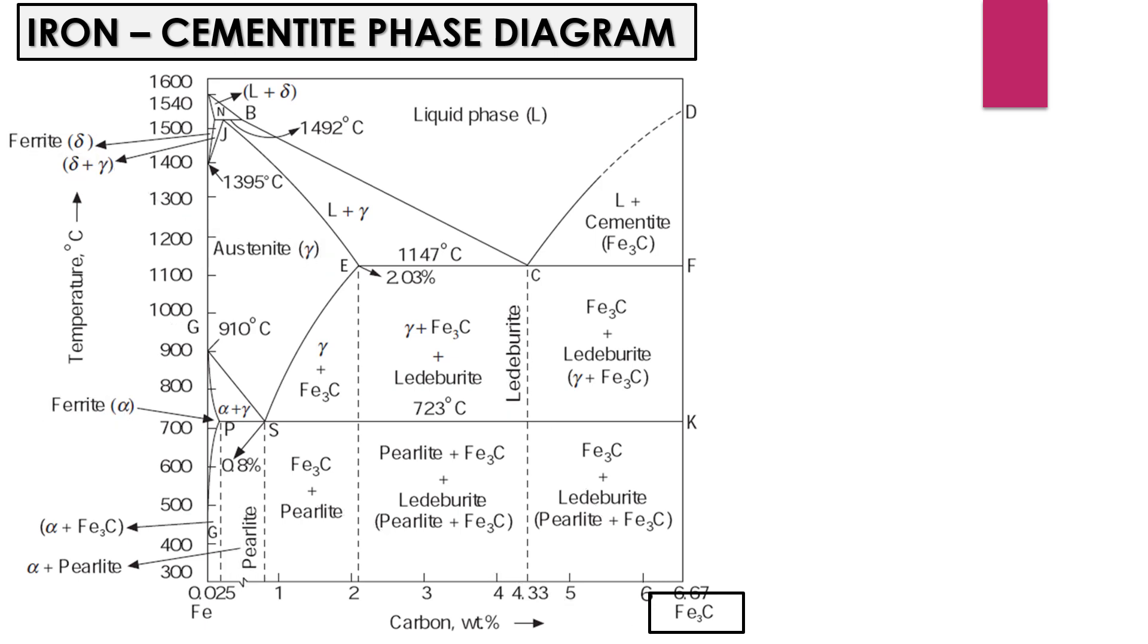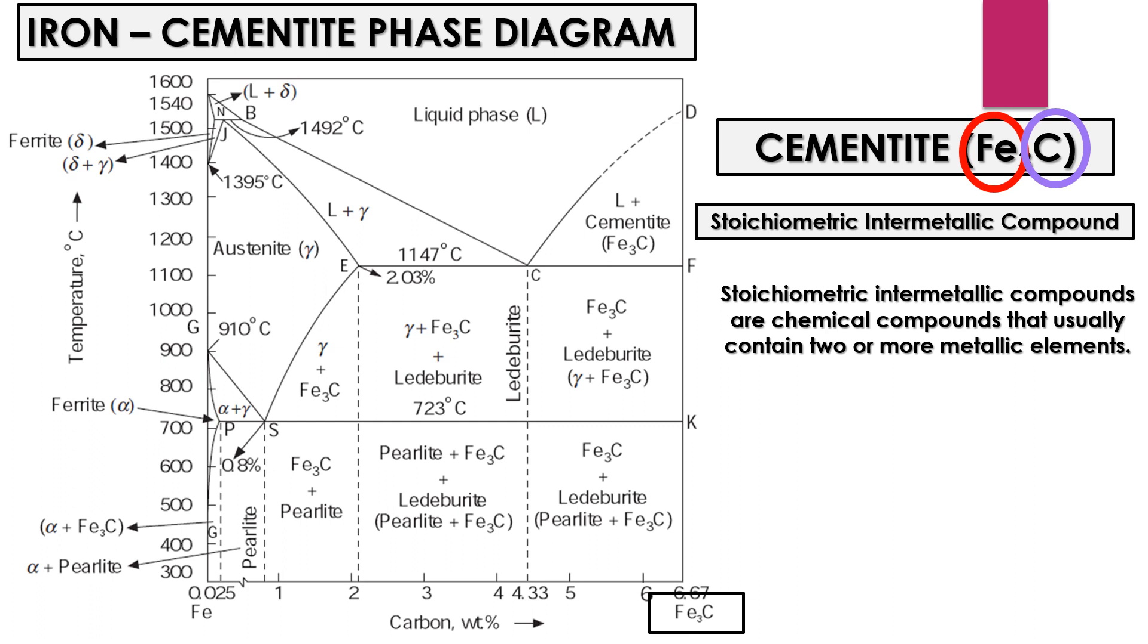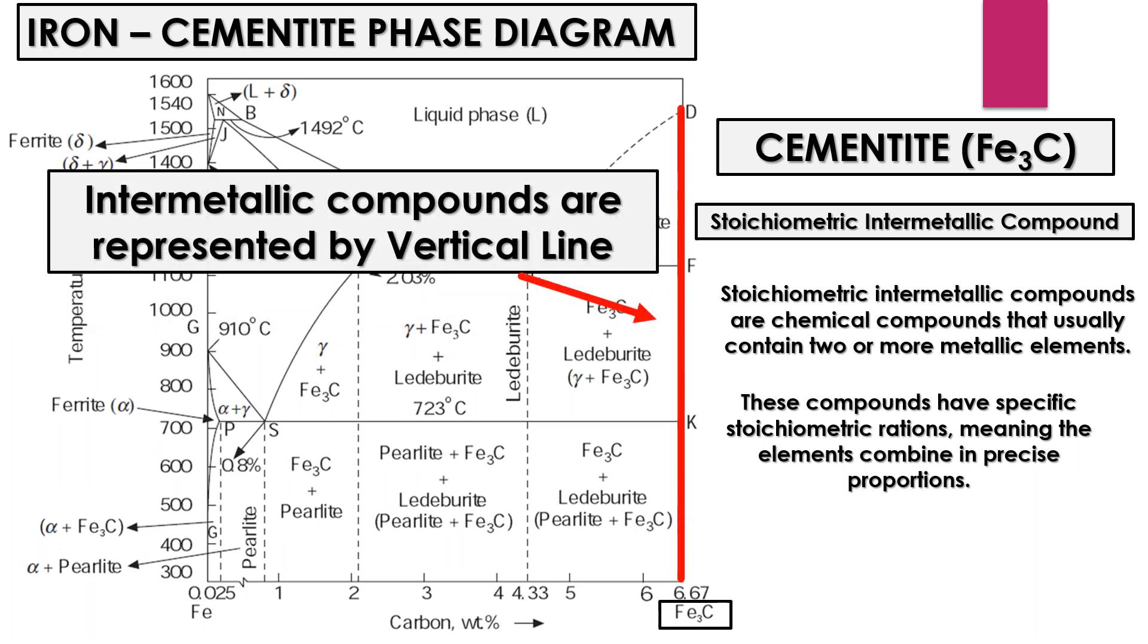Let's begin with the cementite phase. Cementite is a stoichiometric intermetallic compound that consists of iron and carbon atoms. Stoichiometric intermetallic compounds are chemical compounds that usually contain two or more metallic elements. These compounds have specific stoichiometric ratios, meaning the elements combine in precise proportions. That is why the intermetallic compounds are represented by a vertical line on the phase diagram where the composition is fixed.